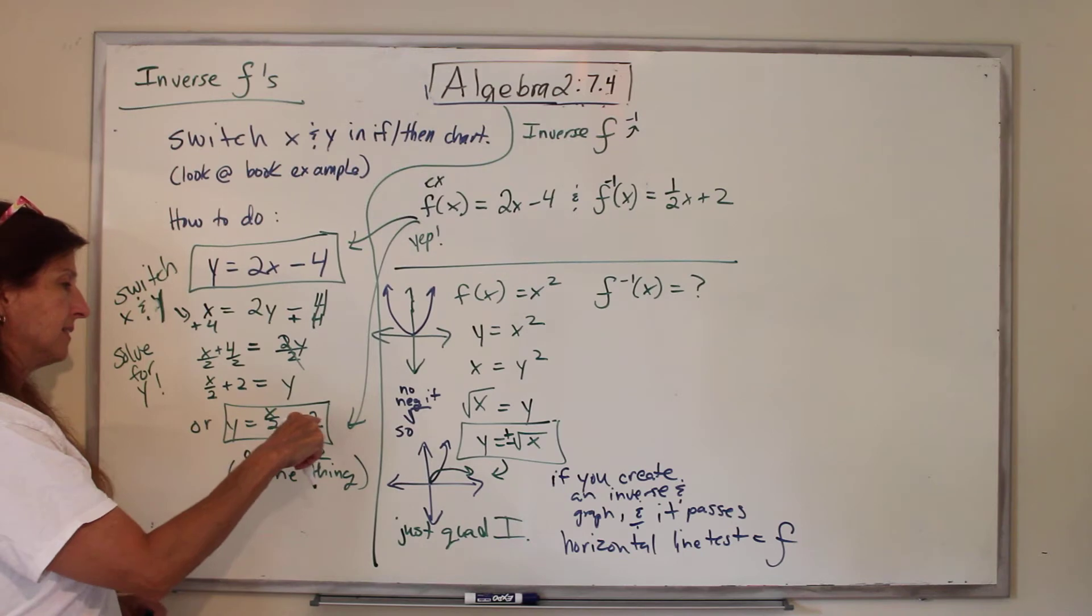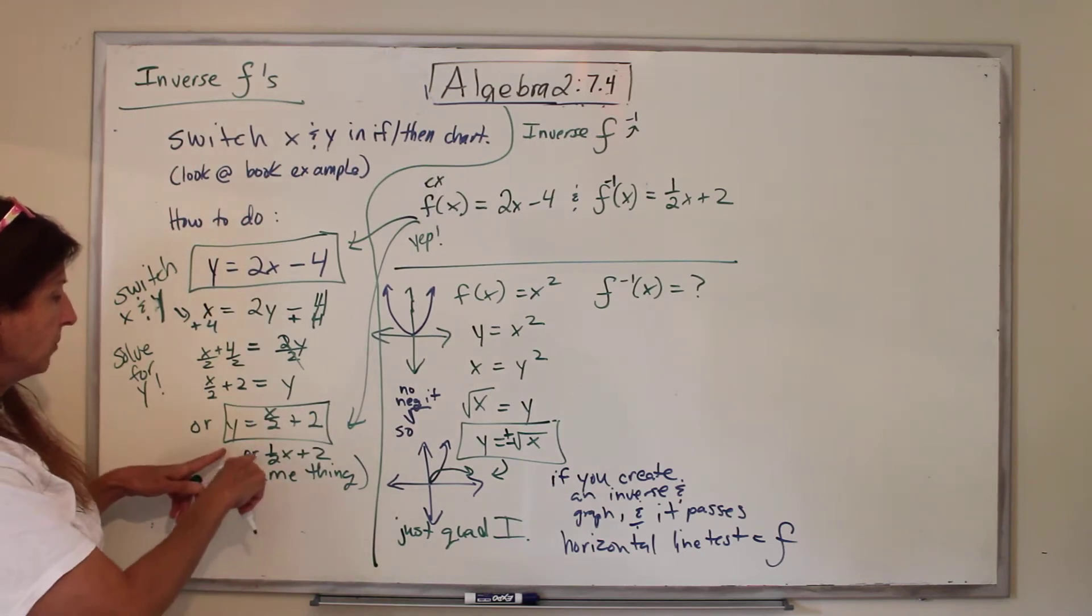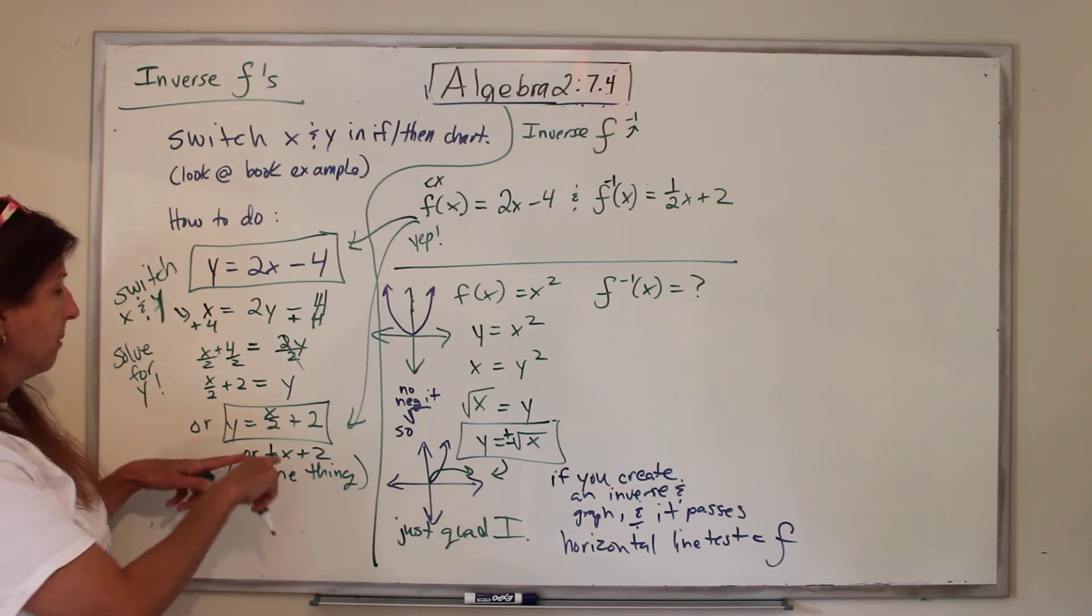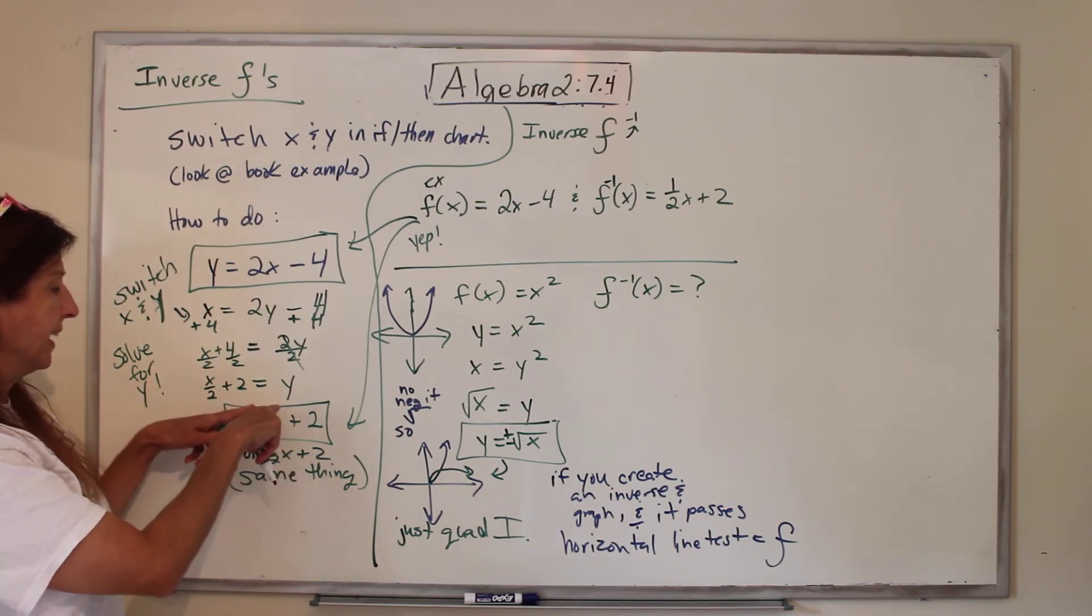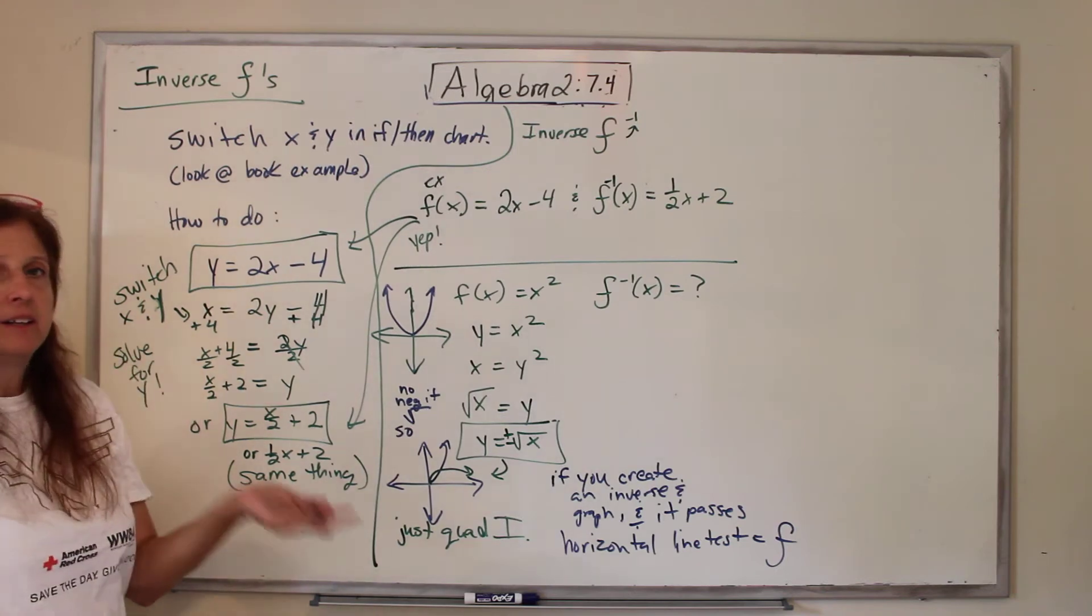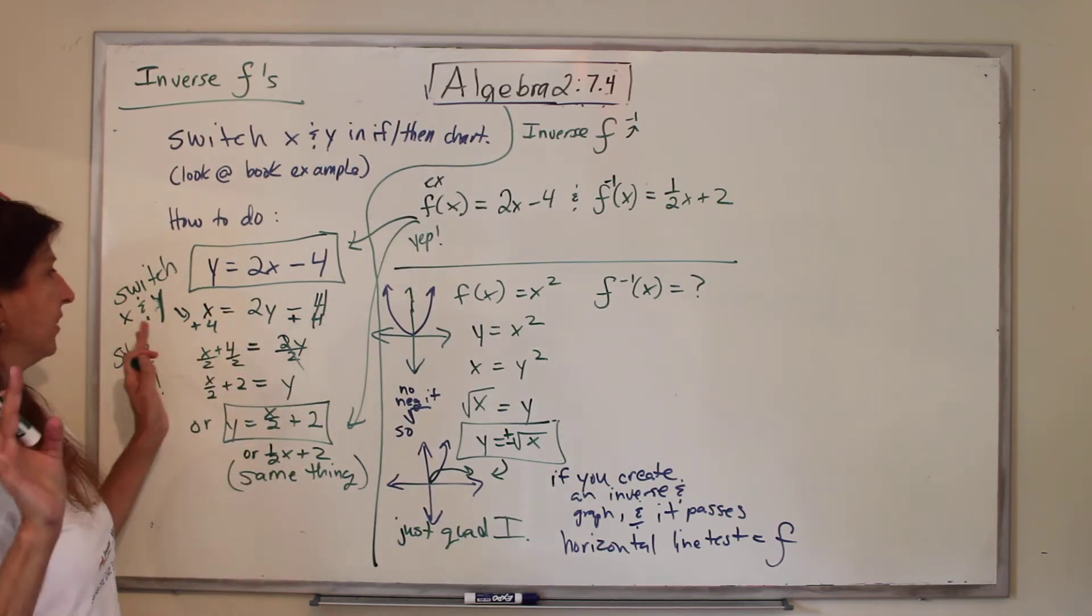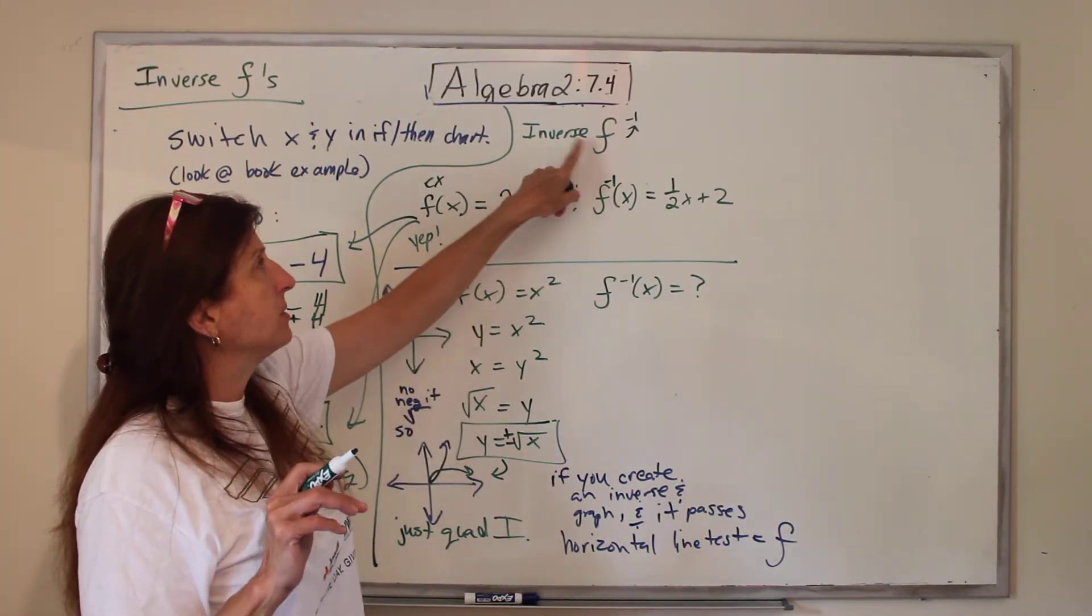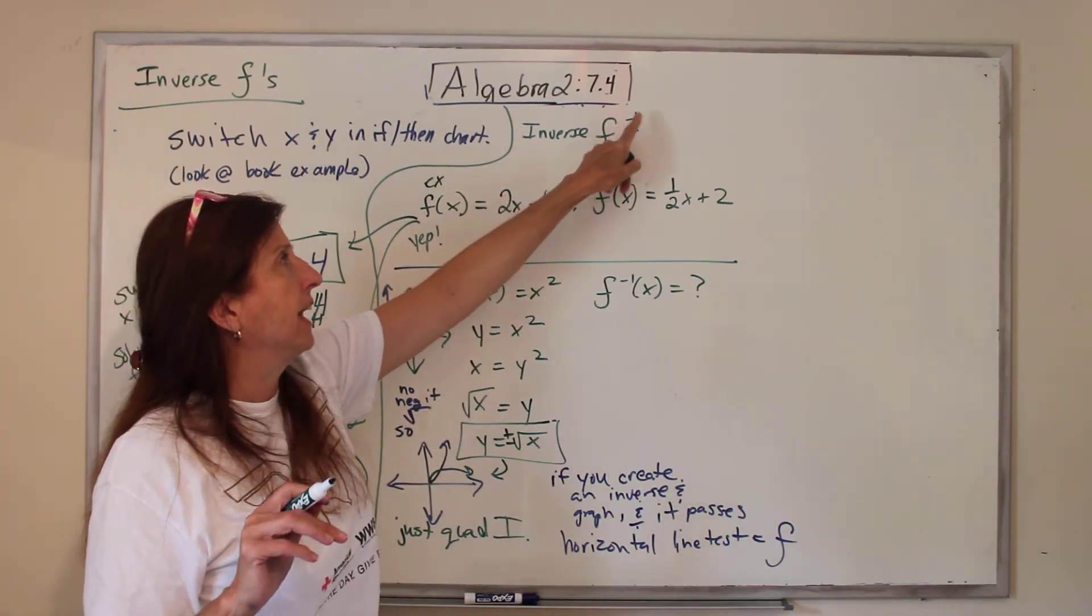Rewrite it. Y equals X over 2 plus 2. You can also write it as 1/2 X plus 2. They're the same thing, because both that 1 and that X are in numerator land, not denominator land. Ta-da! Look in your book at the graphs to see how they work, but I'll show you down here too.